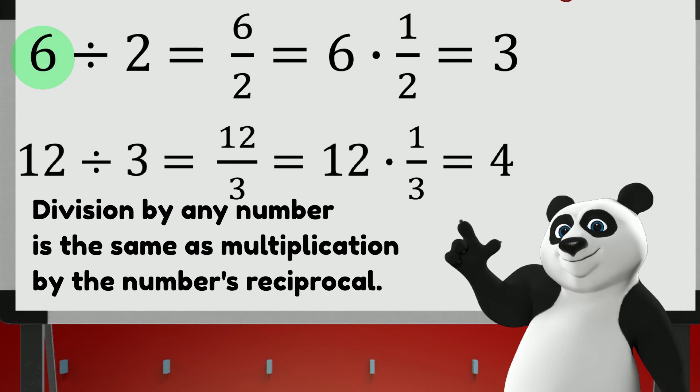The first example is 6 divided by 2, and we showed that it is the same as 6 multiplied by 1 half. 1 half is the reciprocal of 2. From the second example, 12 divided by 3 is the same as 12 multiplied by the reciprocal of 3, which is 1 third.